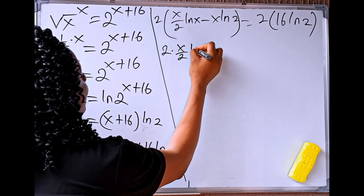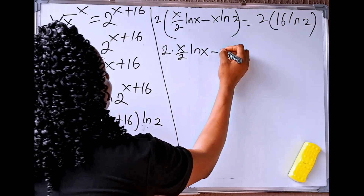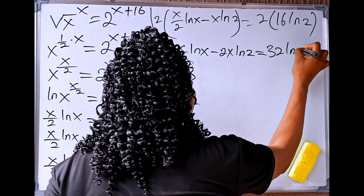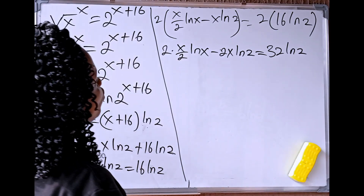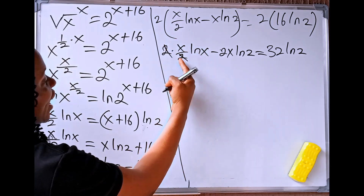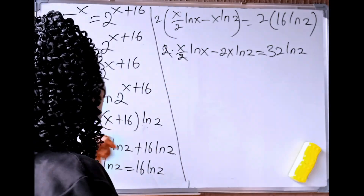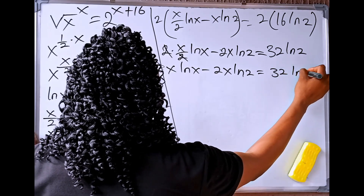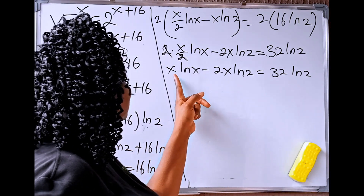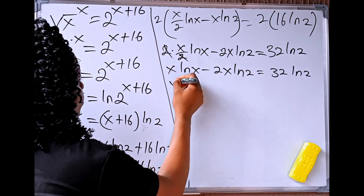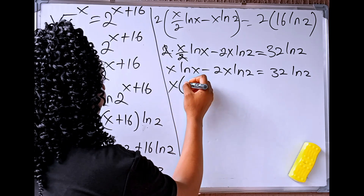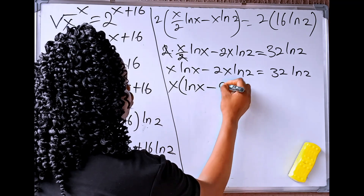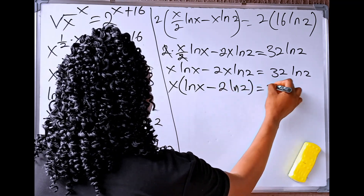We'll have 2 times x divided by 2 times ln of x, minus 2 times x times ln of 2. This equals 2 times 16, which is 32 ln of 2. After cancelling, we have x ln of x minus 2x ln of 2 equals 32 ln of 2. From here, x is a common factor, so we can factor that out, giving us x times ln of x minus 2 ln of 2 equals 32 ln of 2.